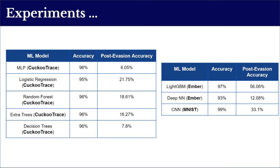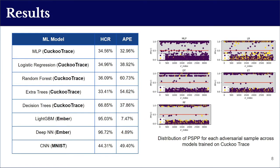Our goal is to obtain deeper insights describing the link between post-perturbation misclassification and each feature perturbation. Therefore, we adopt prior perturbation methods that can reach a high evasion rate. The results table shows two metrics: the high correlation rate and the average perturbation error. The high correlation rate results suggest that for most studied models, more than half of adversarial samples are produced using feature perturbations that have a weak correlation with the evasion result.